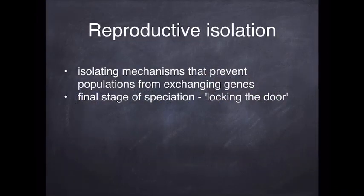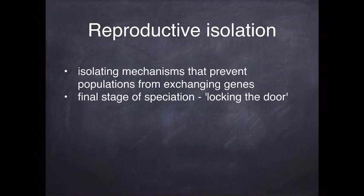Now looking at sympatric speciation, which occurs as a result of reproductive isolation. Reproductive isolation simply means that populations are unable to exchange genes. They do not have to be physically isolated from one another — they can be in exactly the same environment — but for whatever reason they are not able to exchange genes and therefore are reproductively isolated from one another.